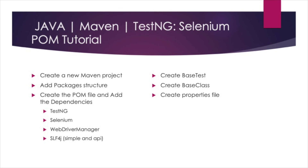And that will conclude part one of our series. Today we covered how to create a Maven project, add the project structure, created the POM file and added the dependencies to it, then created the base test and base class files. If you are not already subscribed to our channel but enjoy the content, I'd encourage you to hit the subscribe button down below, as we upload lots of testing related videos each week on a wide range of topics, from integrating AI into testing to setting up automation frameworks in multiple languages. Thanks for watching and I'll see you on the next one.